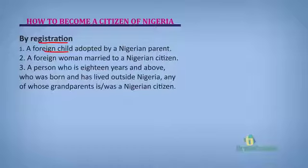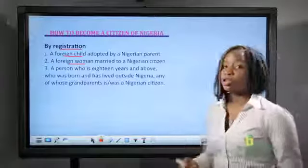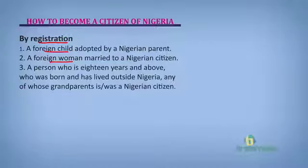The second category of people who have to register to become citizens are foreign women married to Nigerian men. For example, if a Nigerian man gets married to an American woman, she has to come and register before she can become a citizen. And the third category are those who are above 18 years, who are not Nigerian but have a grandparent or great-grandparent who happens to be a Nigerian. Such a person can still come to Nigeria and register, as long as he or she is above 18 years.